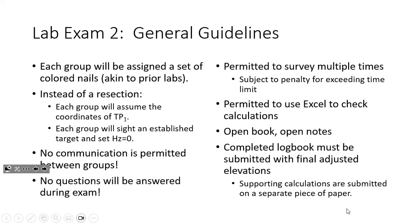For the exam, each group is going to be assigned a group of nails — for example, group one might have the orange nails, group two might have the green nails. You'll do the traverse the same way you've done it before. Just remember that you're going to assume the coordinates of TP1 and set your orientation by setting the target azimuth to zero. You can't communicate between your groups and I'm not going to answer any questions during the exam. You are permitted to do the measurements multiple times, and done properly you should be measuring the distances twice. You're going to submit your notes and calculations at the end.